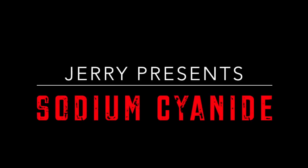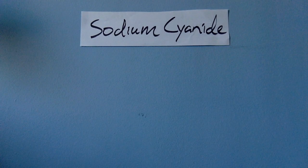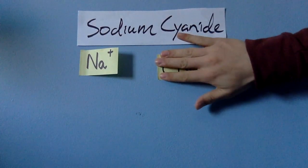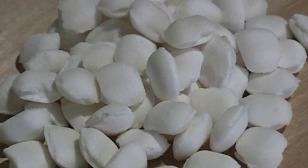Sodium cyanide. Sodium cyanide is an ionic compound made of the metal sodium and the polyatomic ion cyanide. It is a white solid, usually in the form of tablets or crystalline powder.